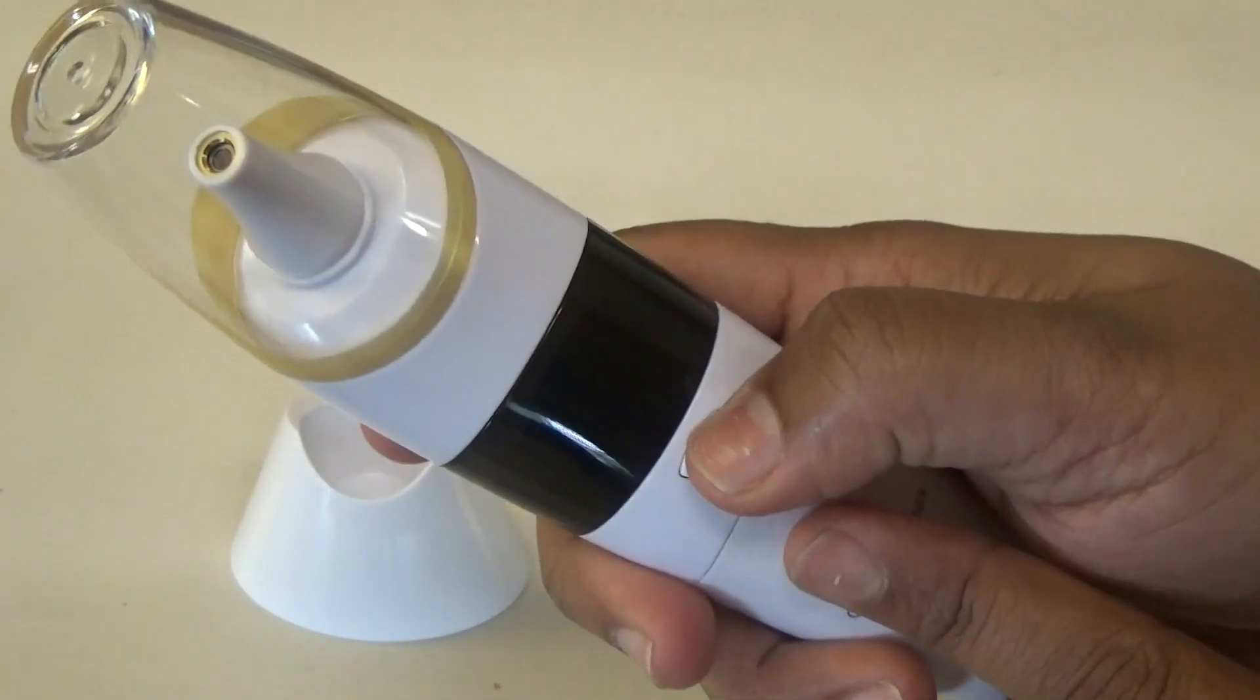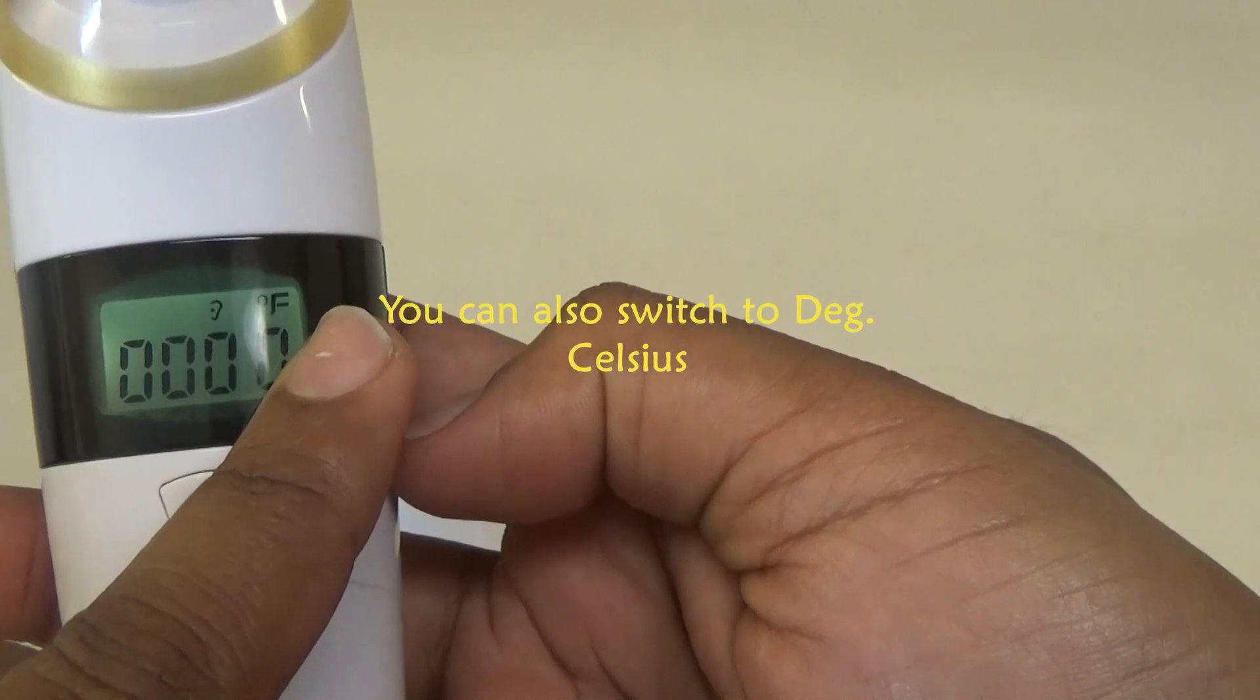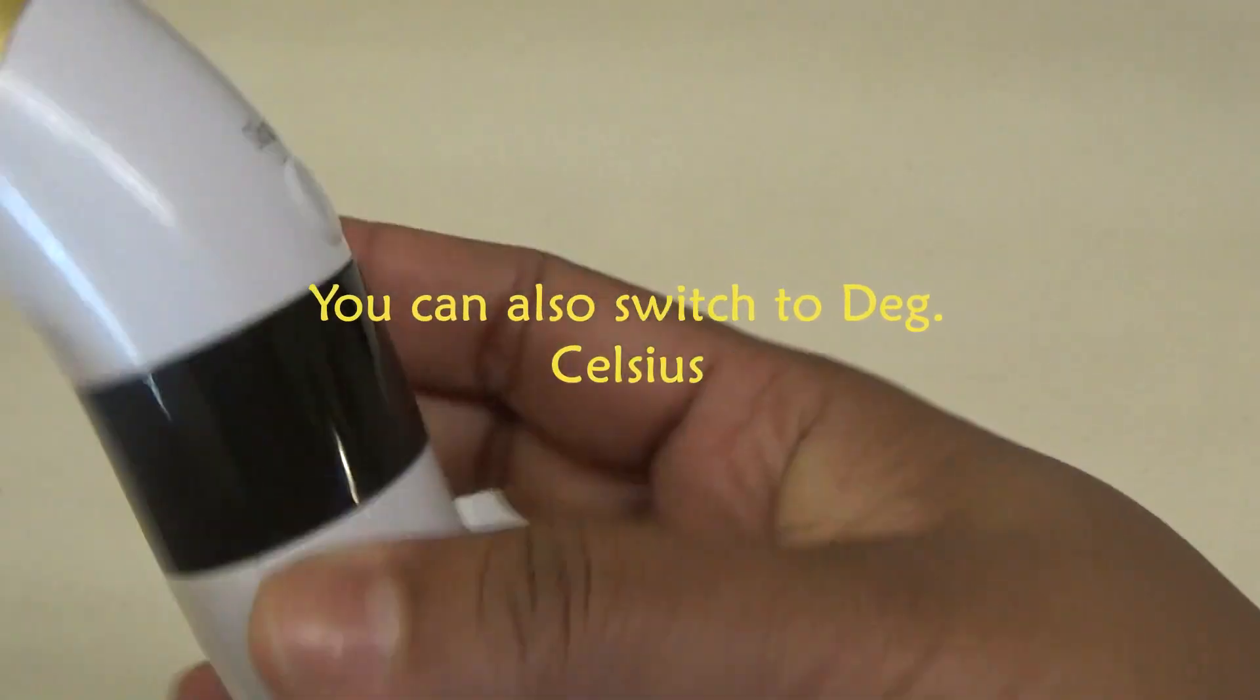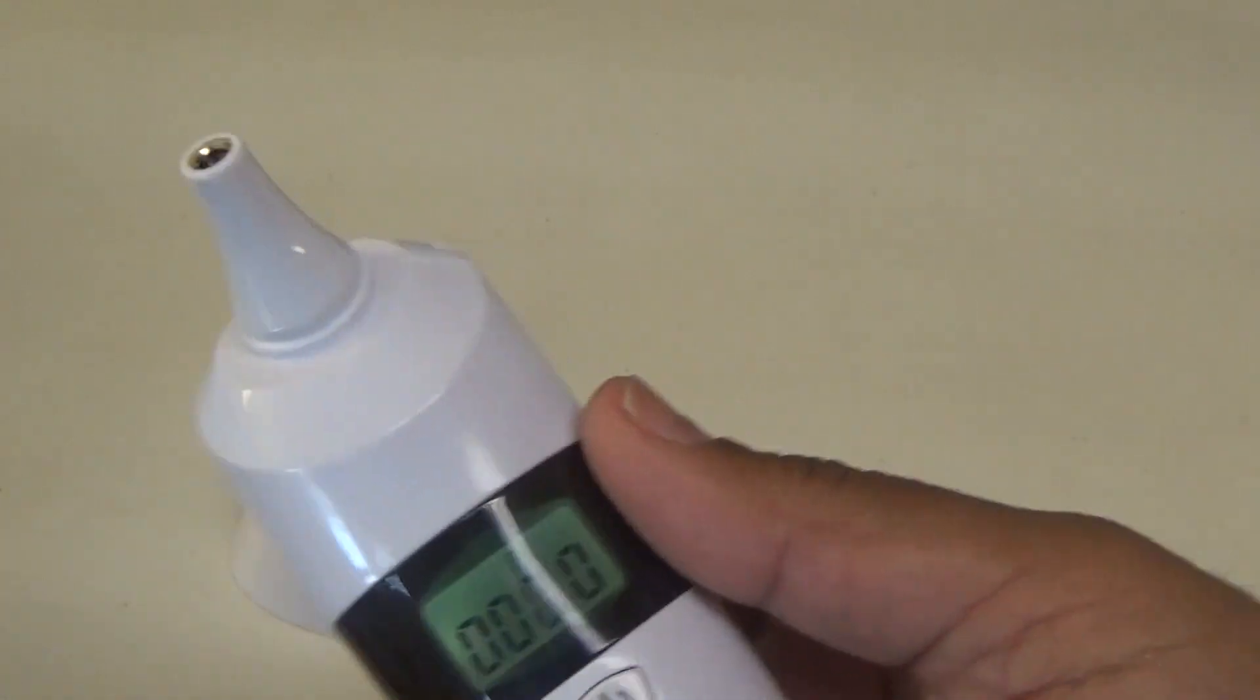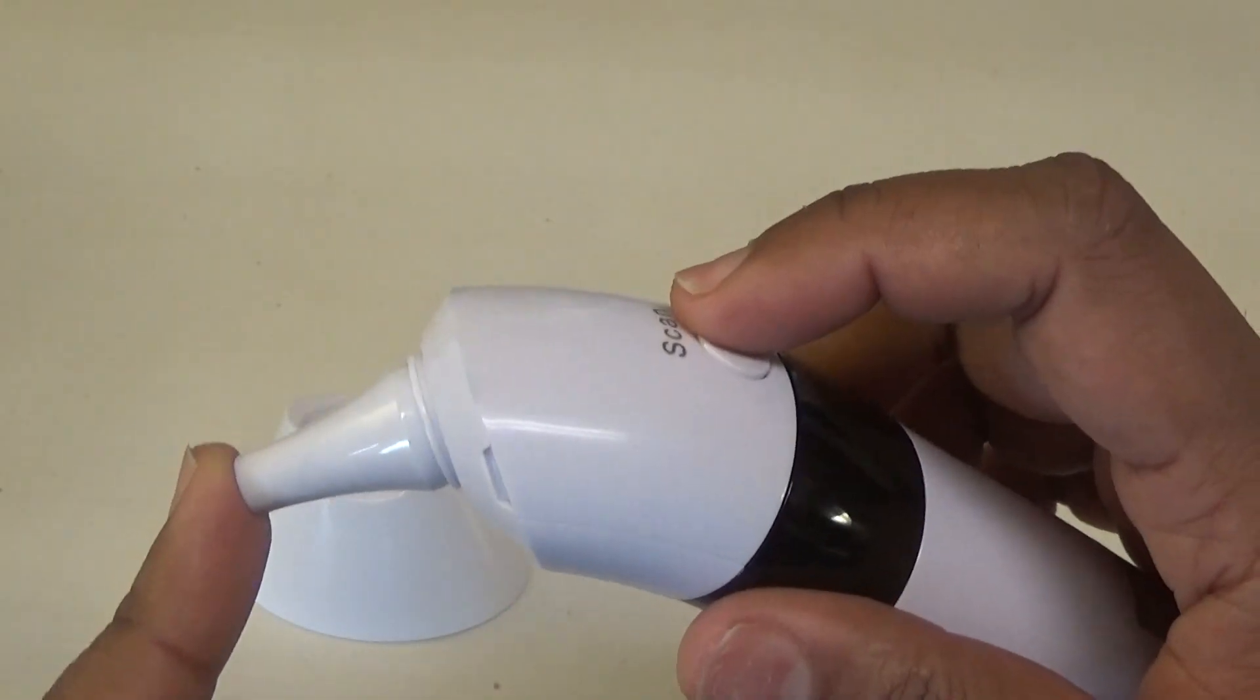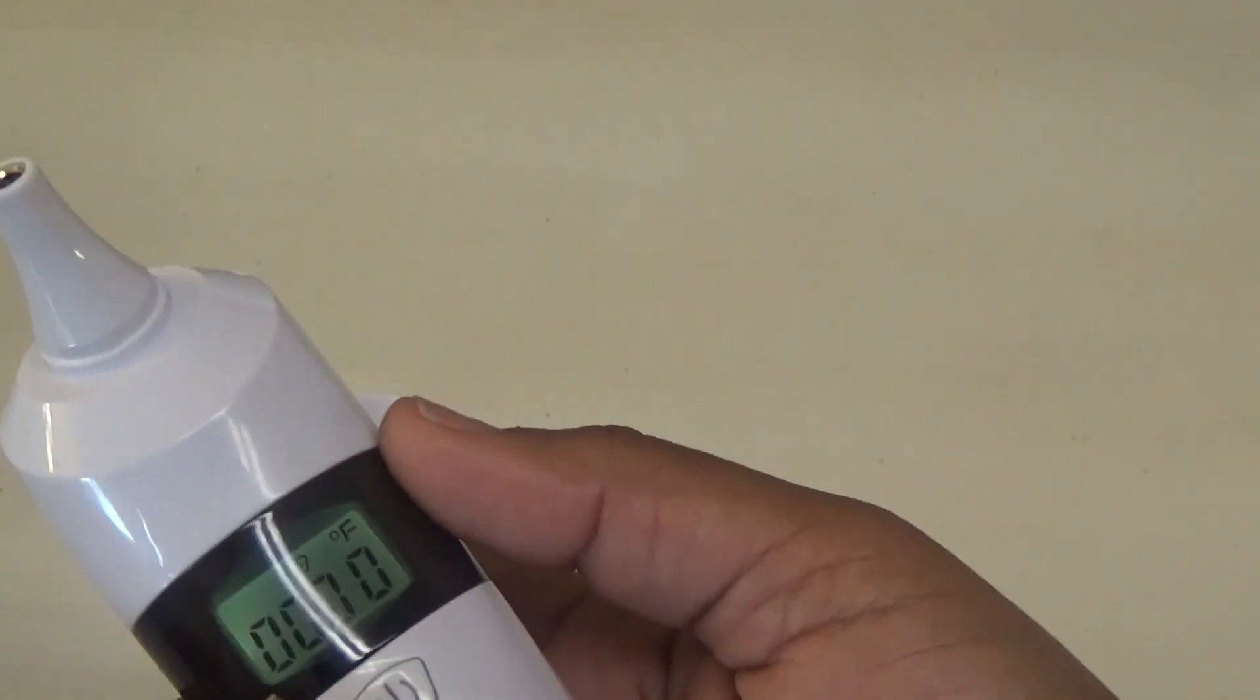This is your power button and right now it's in degrees Fahrenheit. All you have to do is remove this cover and you would put this part into your ear and then press scan. So I'm going to try it and I'll show you.